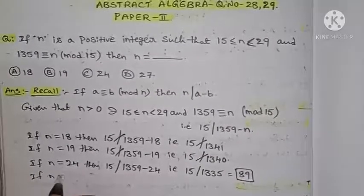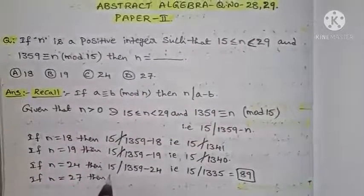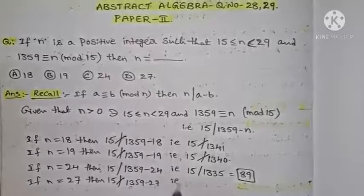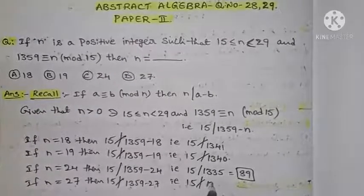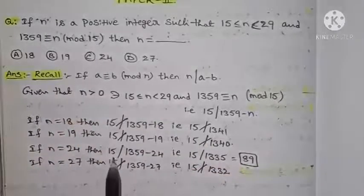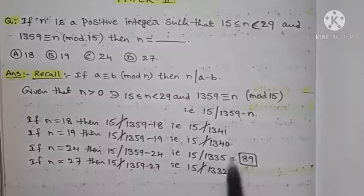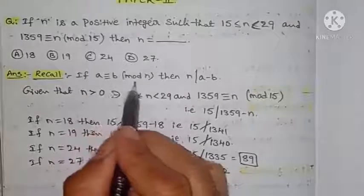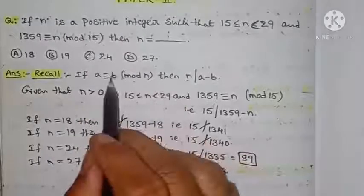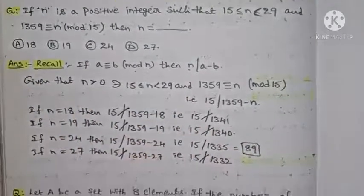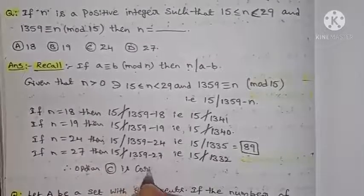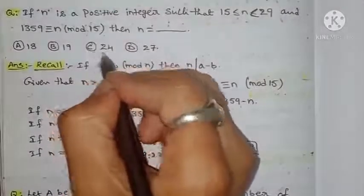Similarly, if n is equal to 27, option D, then 15 does not divide (1359 minus 27), that is 15 does not divide 1332. So whenever n is equal to 24, we get that 15 divides 1335, giving 89. Since a is congruent to b modulo n means n divides (a minus b), n equal to 24 satisfies this condition. Therefore option C is correct, and the required answer is n equals 24.